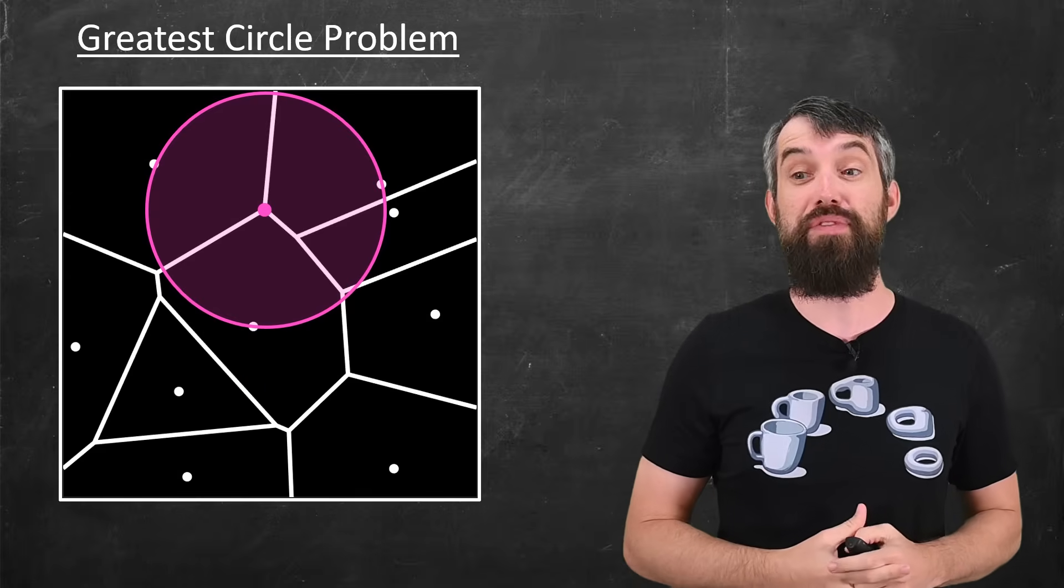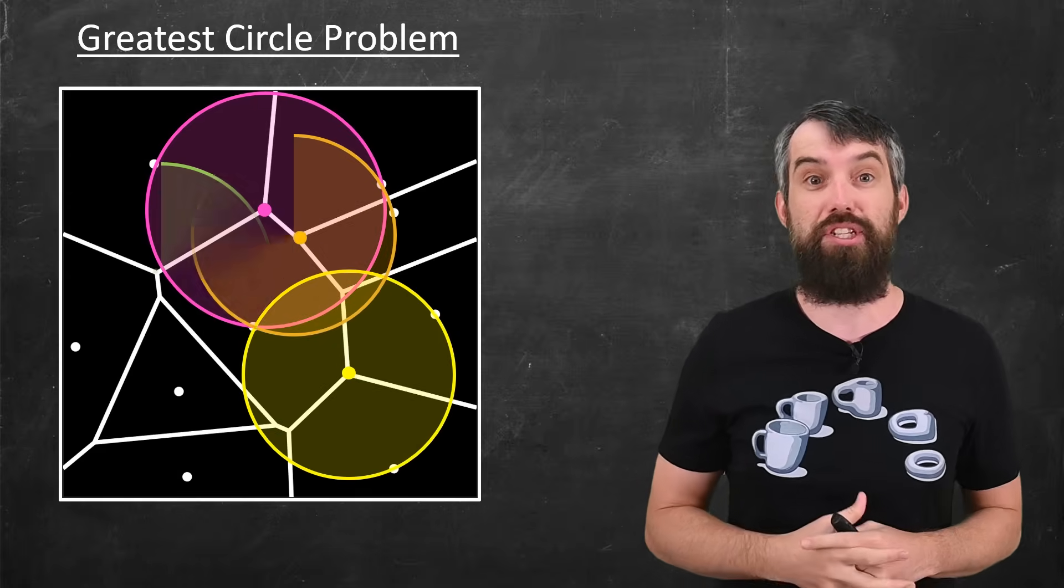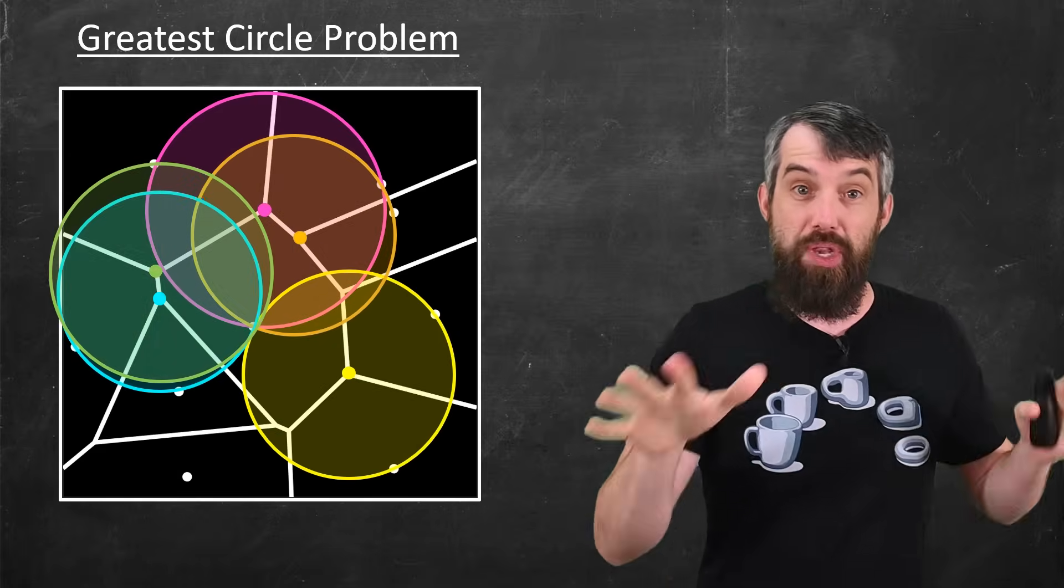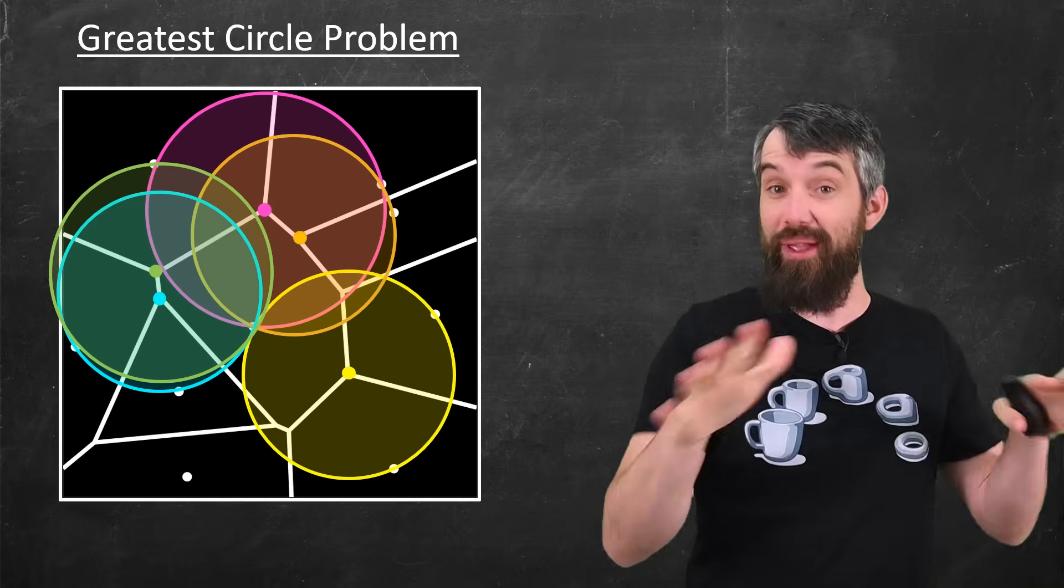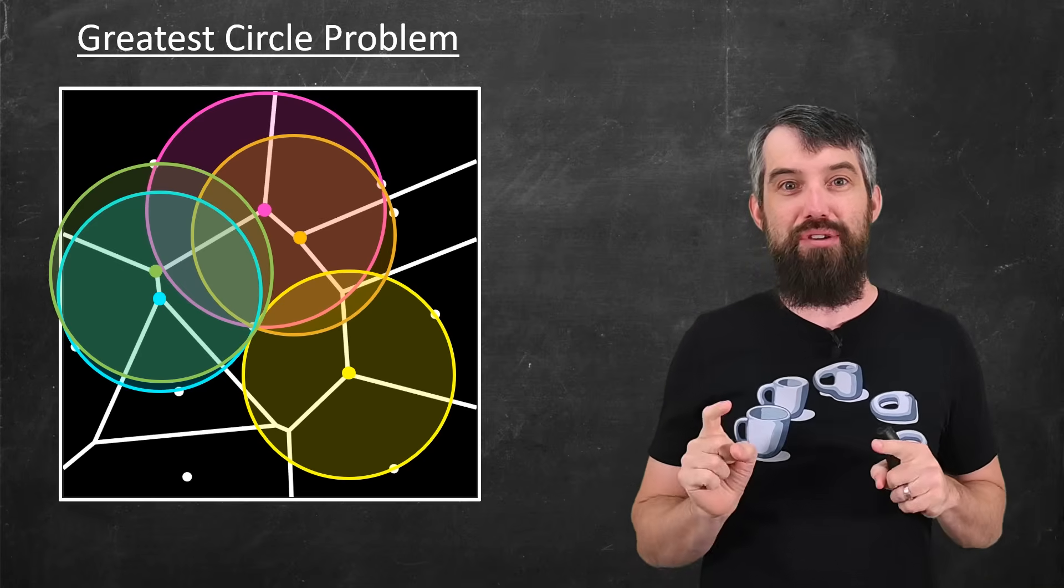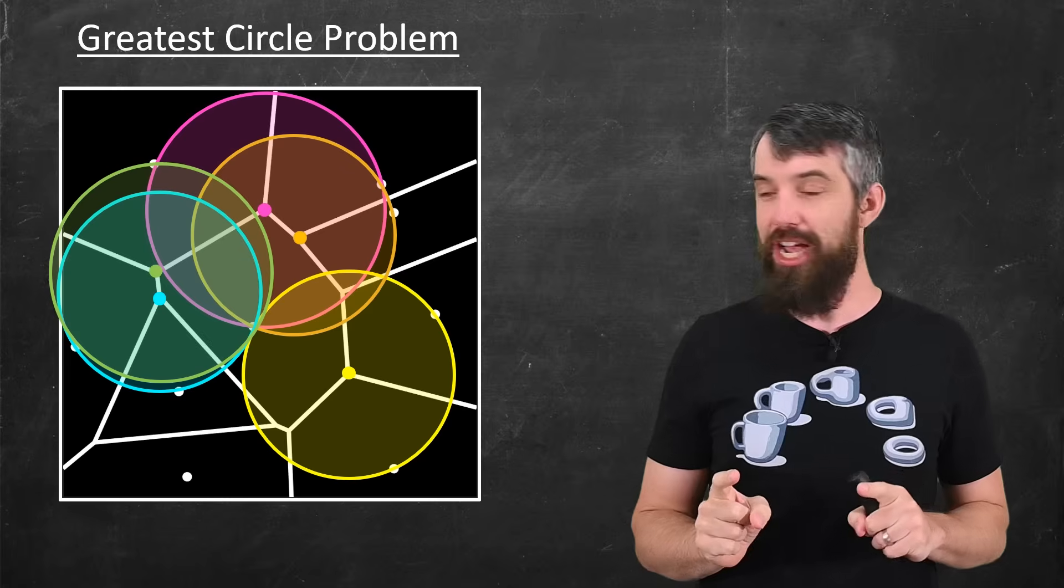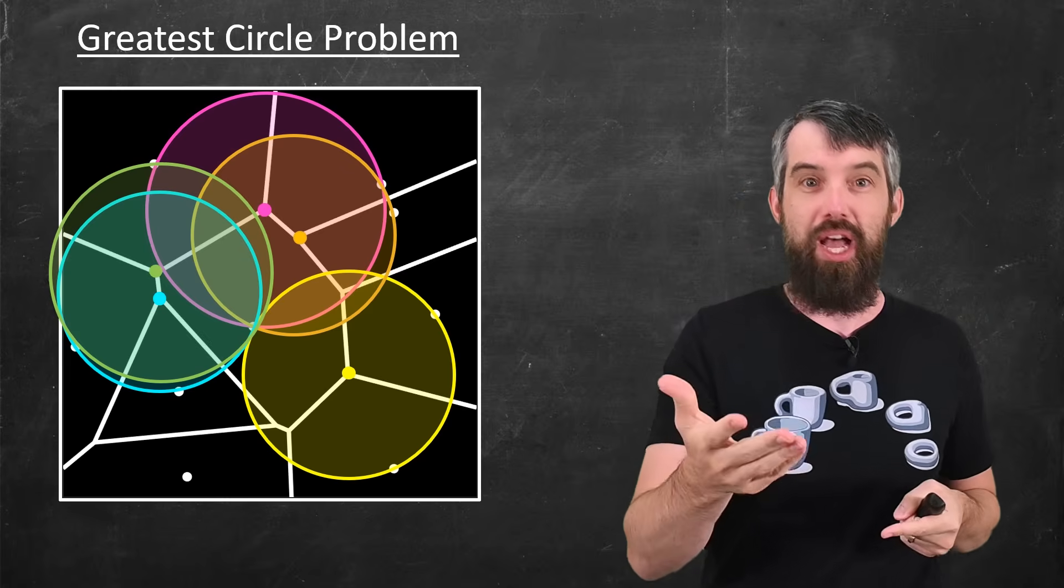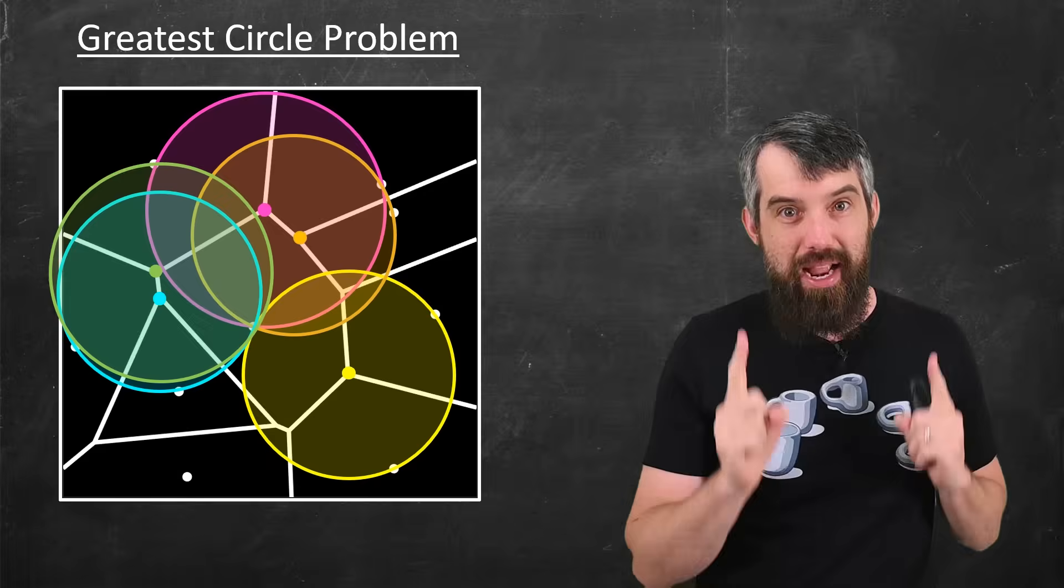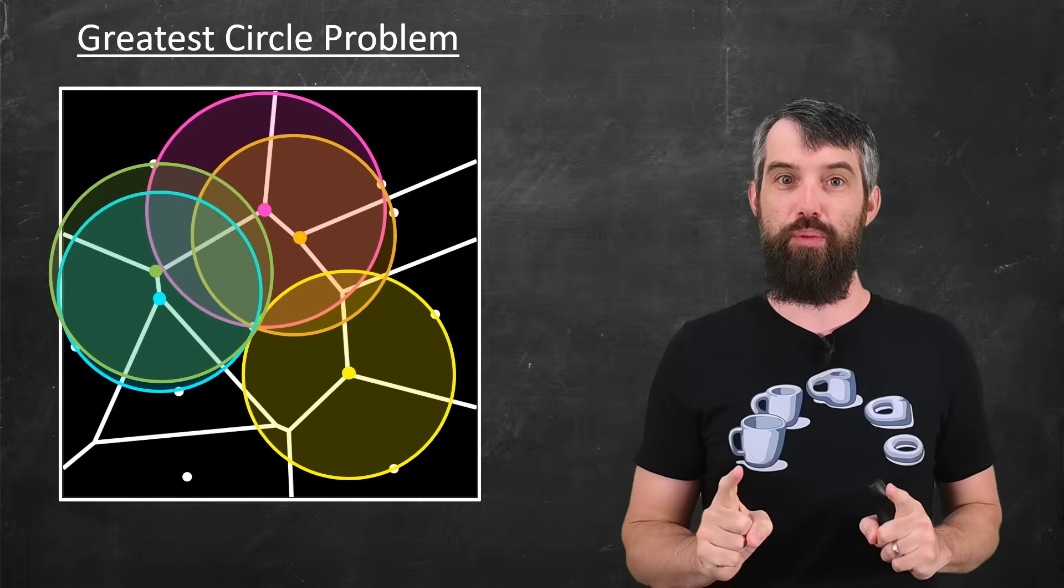So the vertices give you the candidates for the largest possible circle. And then here's where the real computational magic comes in. Yes, there's a bunch of different vertices here. I can plot just some number of them. Unlike with no information where you'd have to sort of check all infinitely many points, now you just have a finite number of vertices to check. So go through, compute which of those allows for the largest circle, and now you've solved the greatest circle problem.